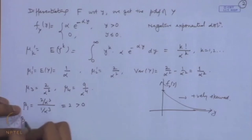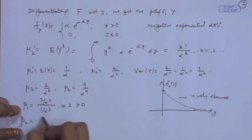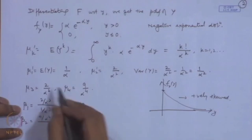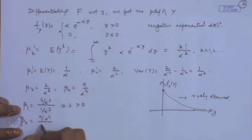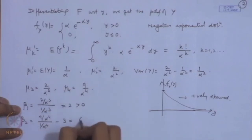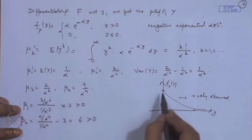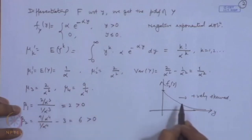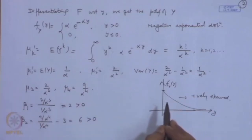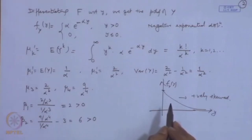We can calculate μ₃ = 2/α³ and μ₄ = 9/α⁴. The measure of skewness equals 2/α³ divided by 1/α³, which equals 2, and is positive — so it is always positively skewed. This is free from the parameter alpha. Similarly, β₂ = 9/α⁴ divided by 1/α⁴ minus 3, equals 6, which is also positive, meaning the peak is higher than the normal peak.